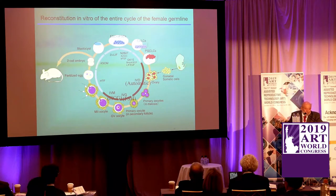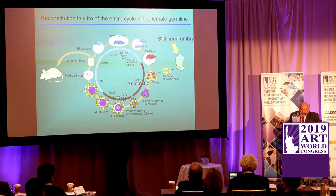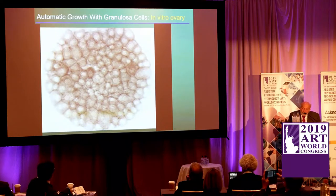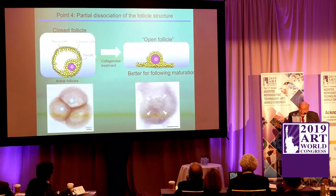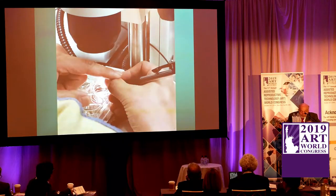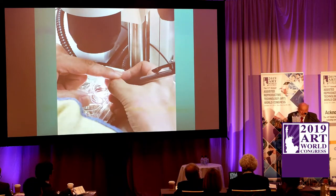We can do the same thing with generated IPS cells, but you still need embryonic cells — which we can't get in humans. So we need to develop the equivalent of embryonic granulosa cells and embryonic Sertoli cells. This is the automatic growth with granulosa cells of an in vitro ovary. When we finally get the follicles formed, we have to open up that follicle — just a technical step to make the FSH culture work. It's very tricky microsurgery, very technician-dependent, and Hayashi and Ori have fantastic hands.